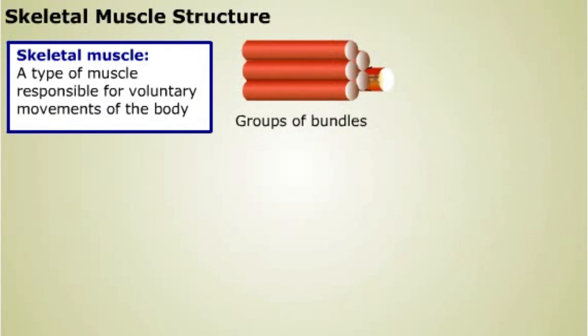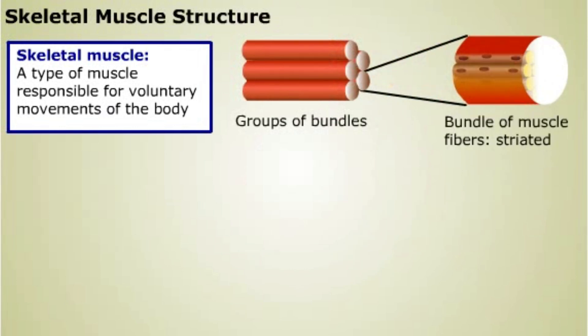This pattern makes the muscle appear striped or striated, so skeletal muscle is a type of striated muscle.